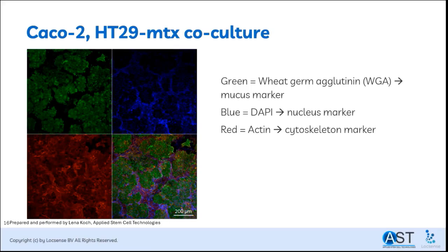In the resulting co-culture, the green staining visualizes wheat germ agglutinin, which is a mucus marker. This staining is significantly more present in a co-culture with HT29-MTX cells compared to a monoculture of only Caco-2 cells. DAPI is a nucleus marker, and actin, a cytoskeleton marker, showing completely covered transwell.